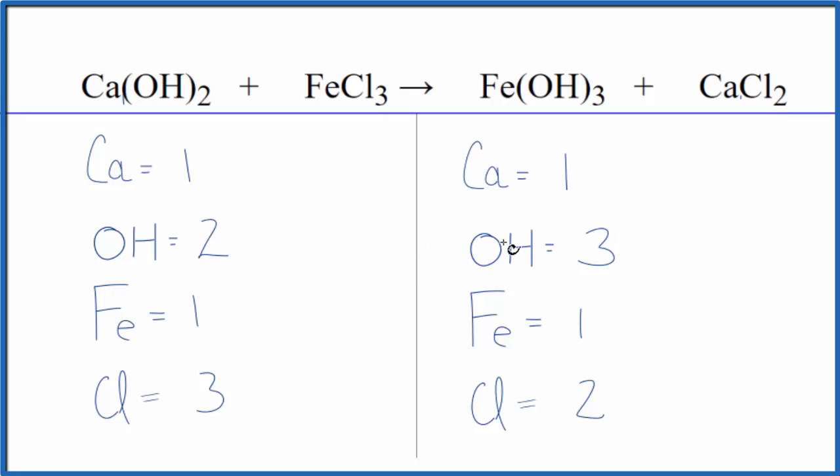I have three here and two here. Let's get this to be an even number. I'm going to put a two here, so three hydroxides times two, that'll give us six. And then we have one times two, so we have two iron atoms. Now I could put a three in front of the calcium hydroxide.